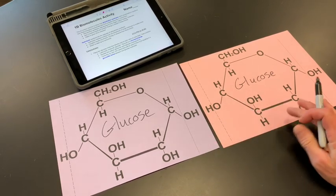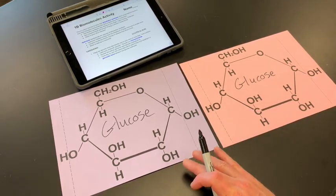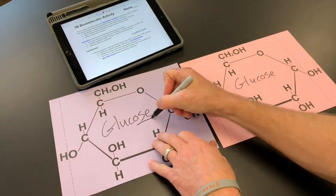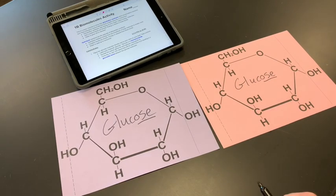So these are monosaccharides, mono meaning one, and saccharides are sugars. Also, just anything ending in -ose, like glucose, sucrose, fructose, and so on, those are also sugars.